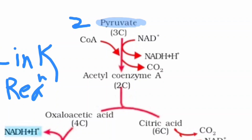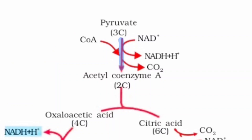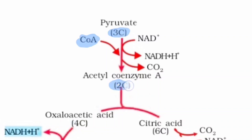So here this is the link reaction. This conversion of pyruvate into acetyl coenzyme A is called the link reaction. Basically it is the oxidation of pyruvate, and here the meaning of oxidation is removal of hydrogen. Whenever coenzyme A comes into the reaction, the three-carbon pyruvate molecule is converted into a two-carbon molecule and one carbon dioxide is released. NAD⁺ is converted into NADH + H⁺.